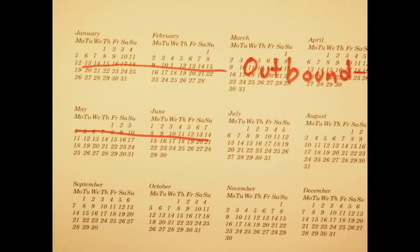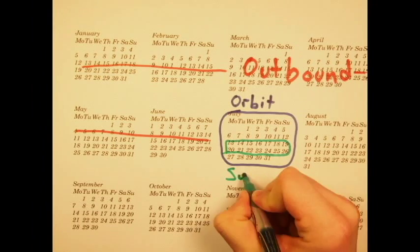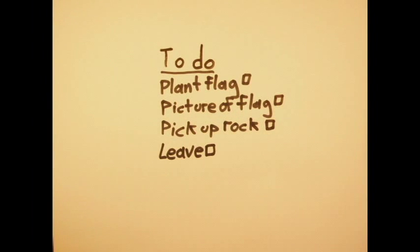Their outbound trip would take about six months, but they would only be able to stay in Mars orbit for one month and only on the surface for about two weeks. The crew would have time to take some pictures, pick up some rocks, maybe look under some other rocks, and plant a flag, but not nearly enough time for any meaningful exploration.